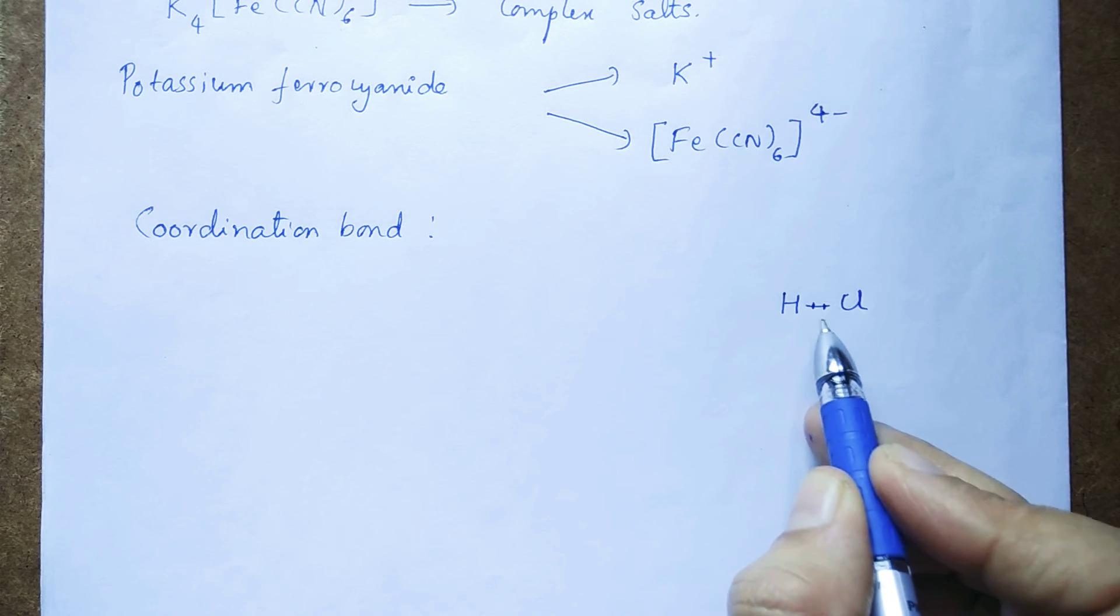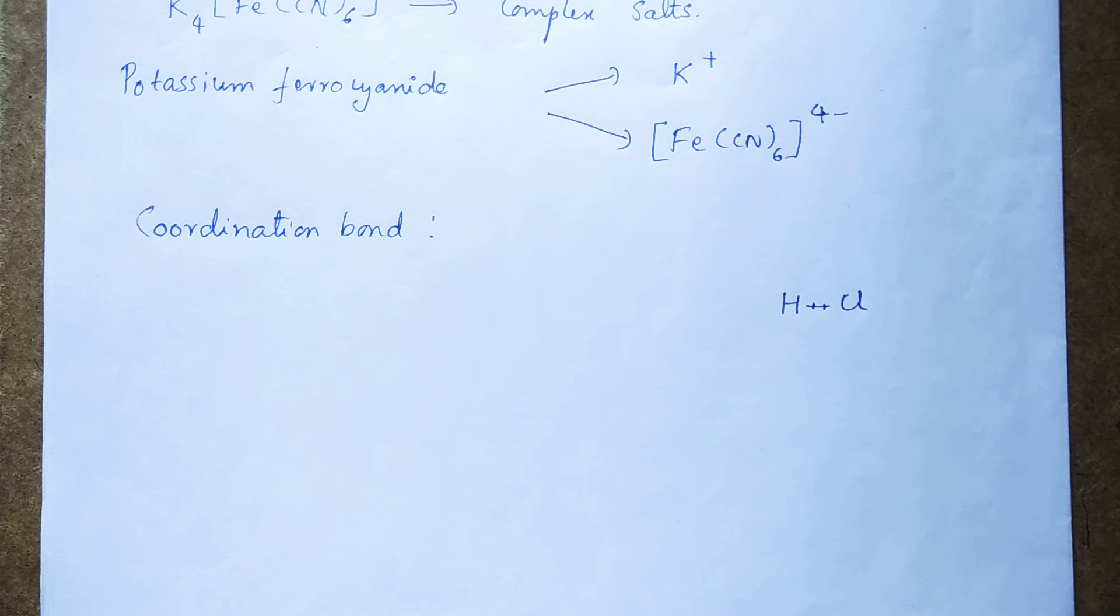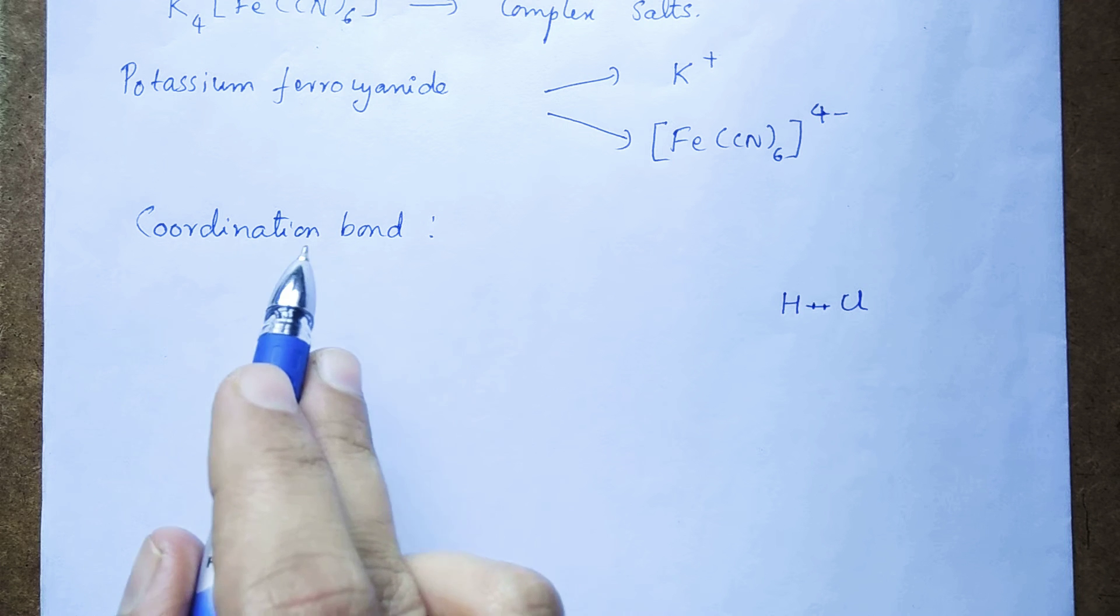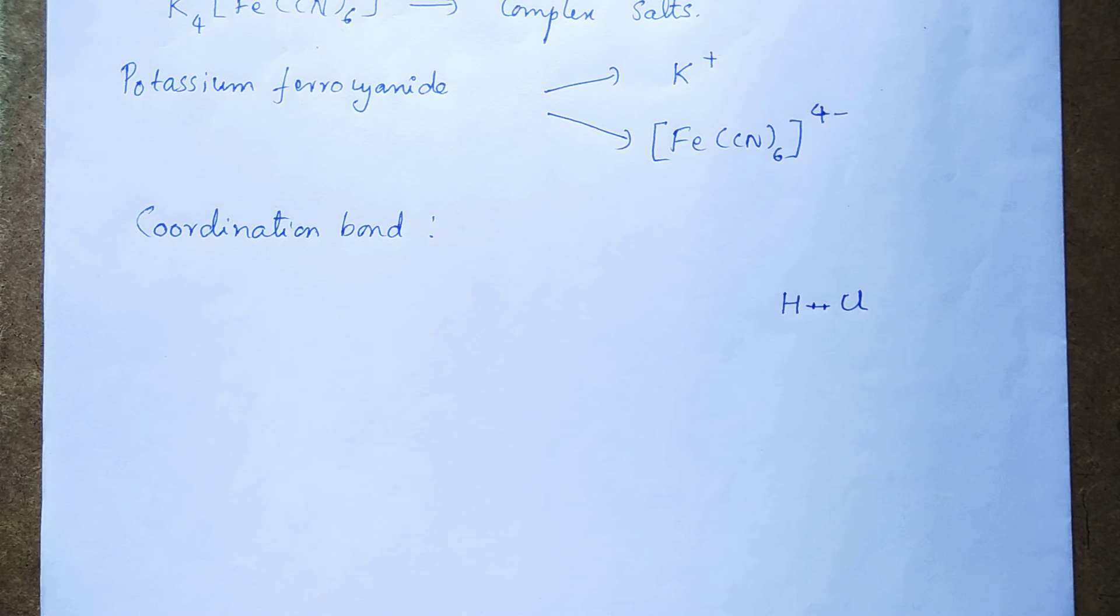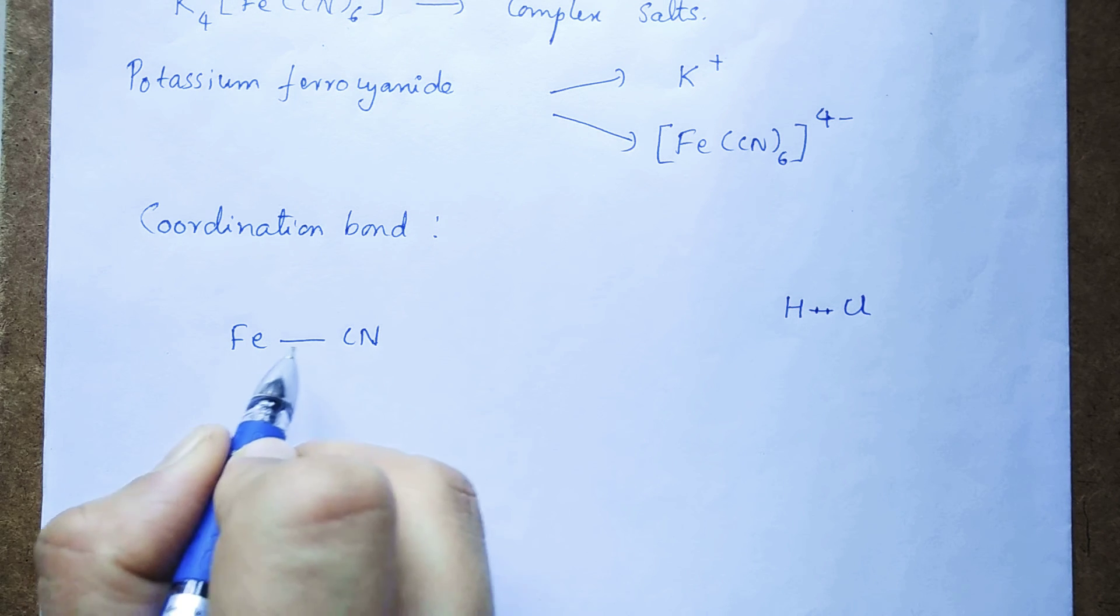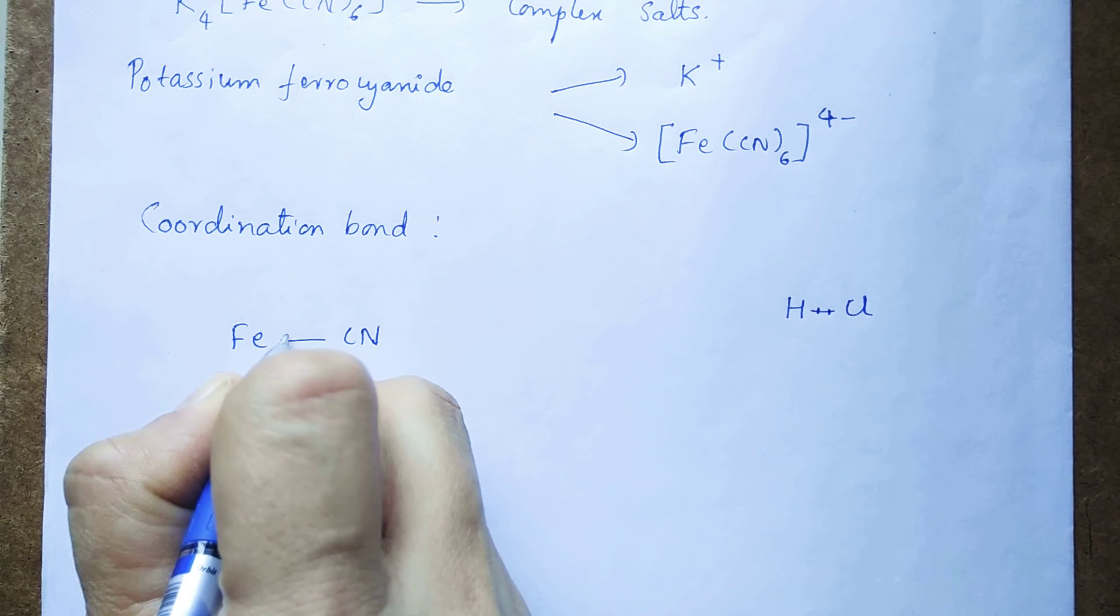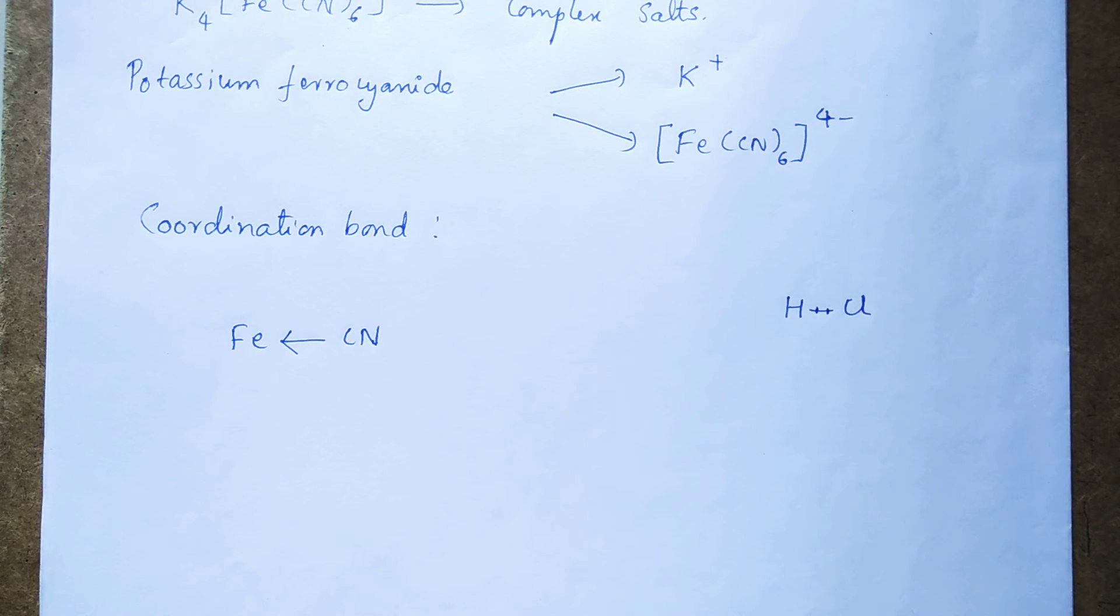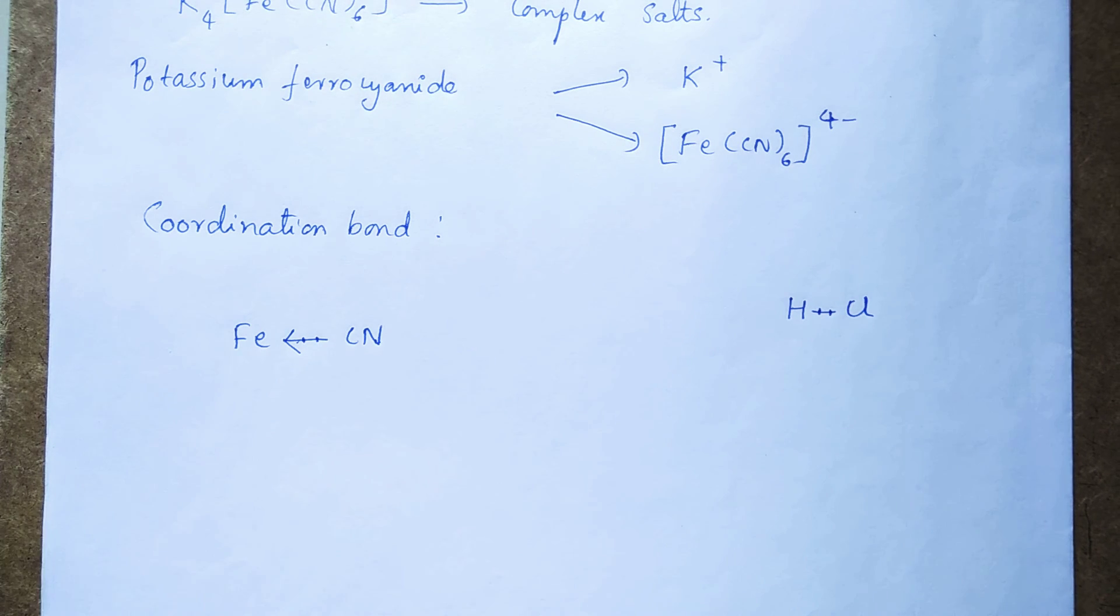I told you that coordination bond is also similar to covalent bond. There also sharing of electrons takes place. If you take the example of this ferrocyanide complex ion, we have a coordination bond between iron and cyanide. So sharing of electrons takes place between Fe and cyanide, but both the electrons of the bond are contributed by cyanide ion only. So what is it? Cyanide initially donates two electrons or contributes two electrons for coordination bond formation. Once contributed, both these electrons are equally shared between iron and cyanide.